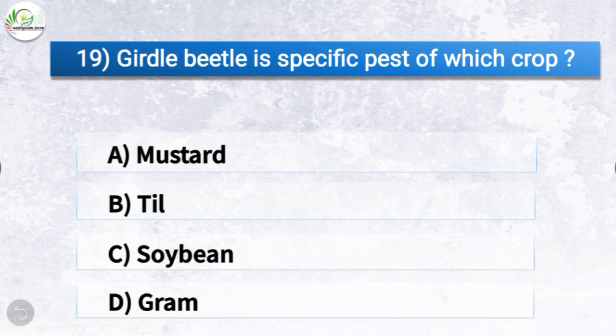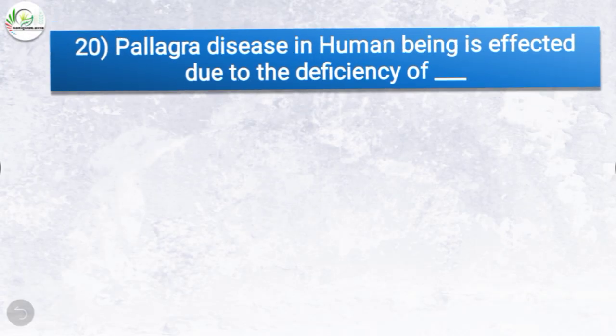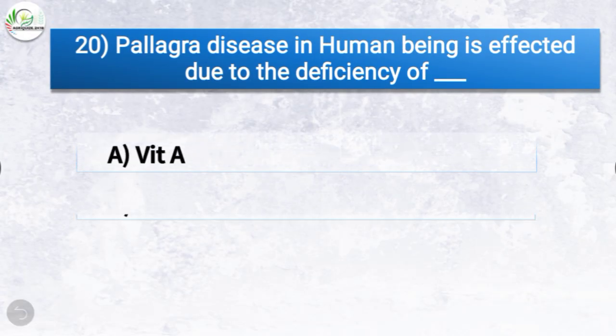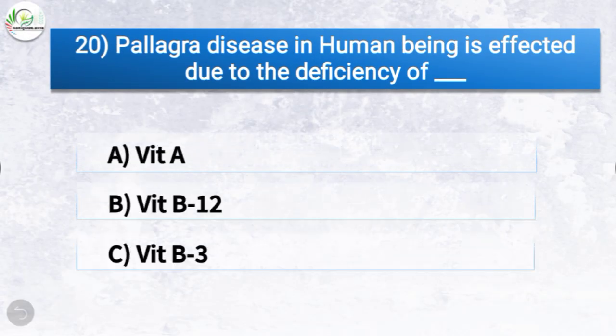Question number nineteen: girdle beetle is a specific pest of which crop? The options are mustard, till, soybean, or gram. The correct answer is option C, soybean. So girdle beetle is a specific pest of soybean.